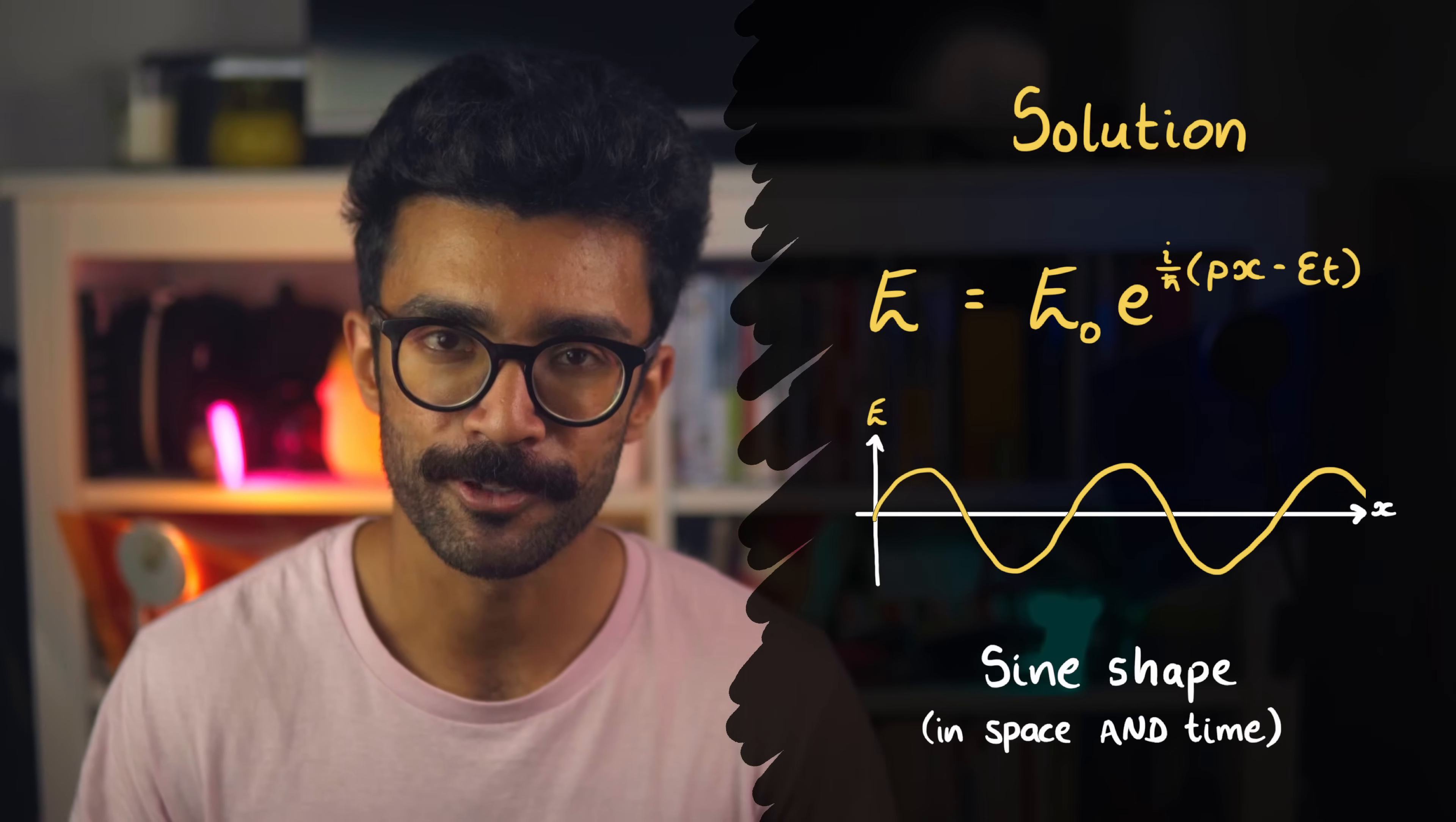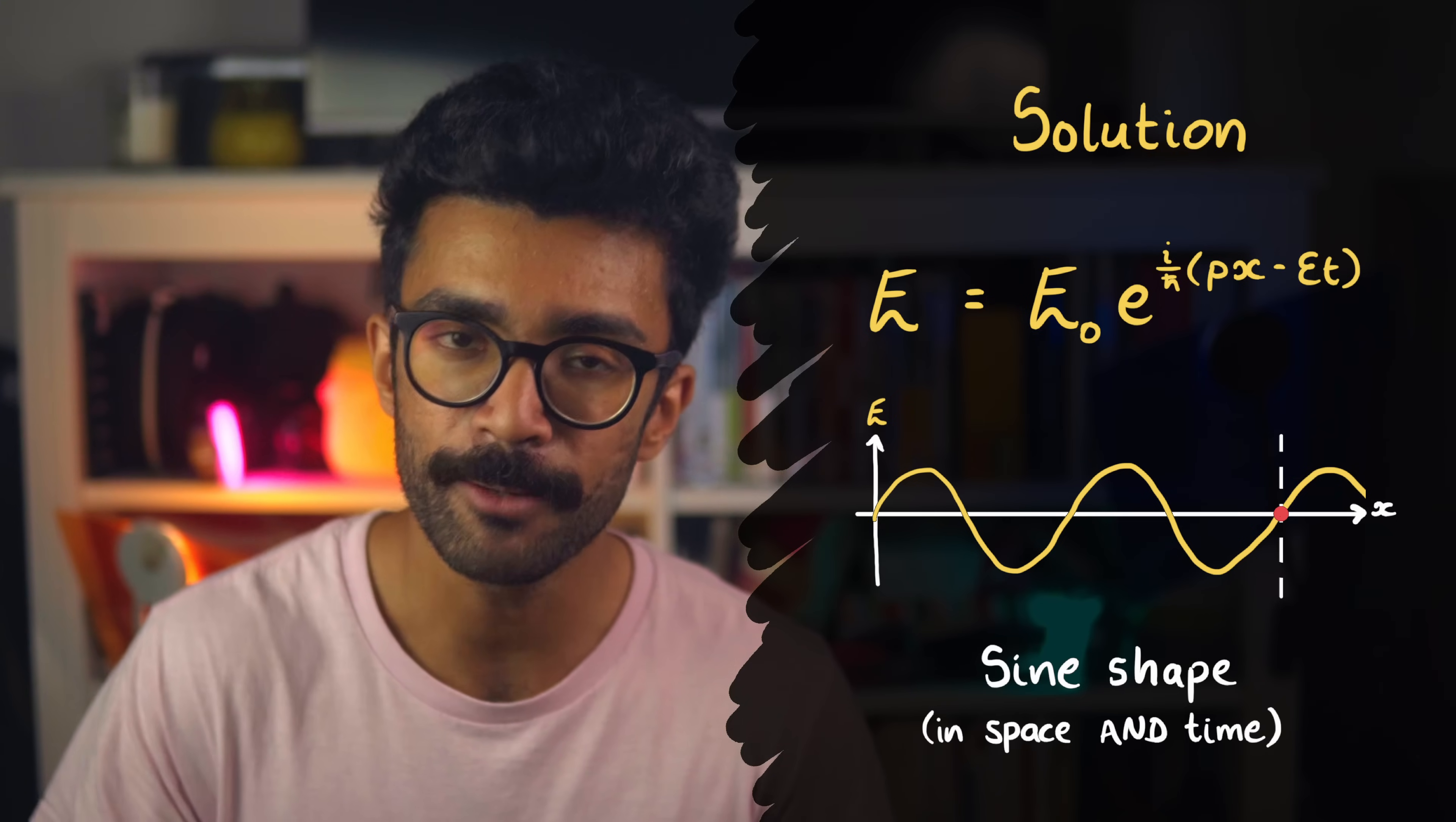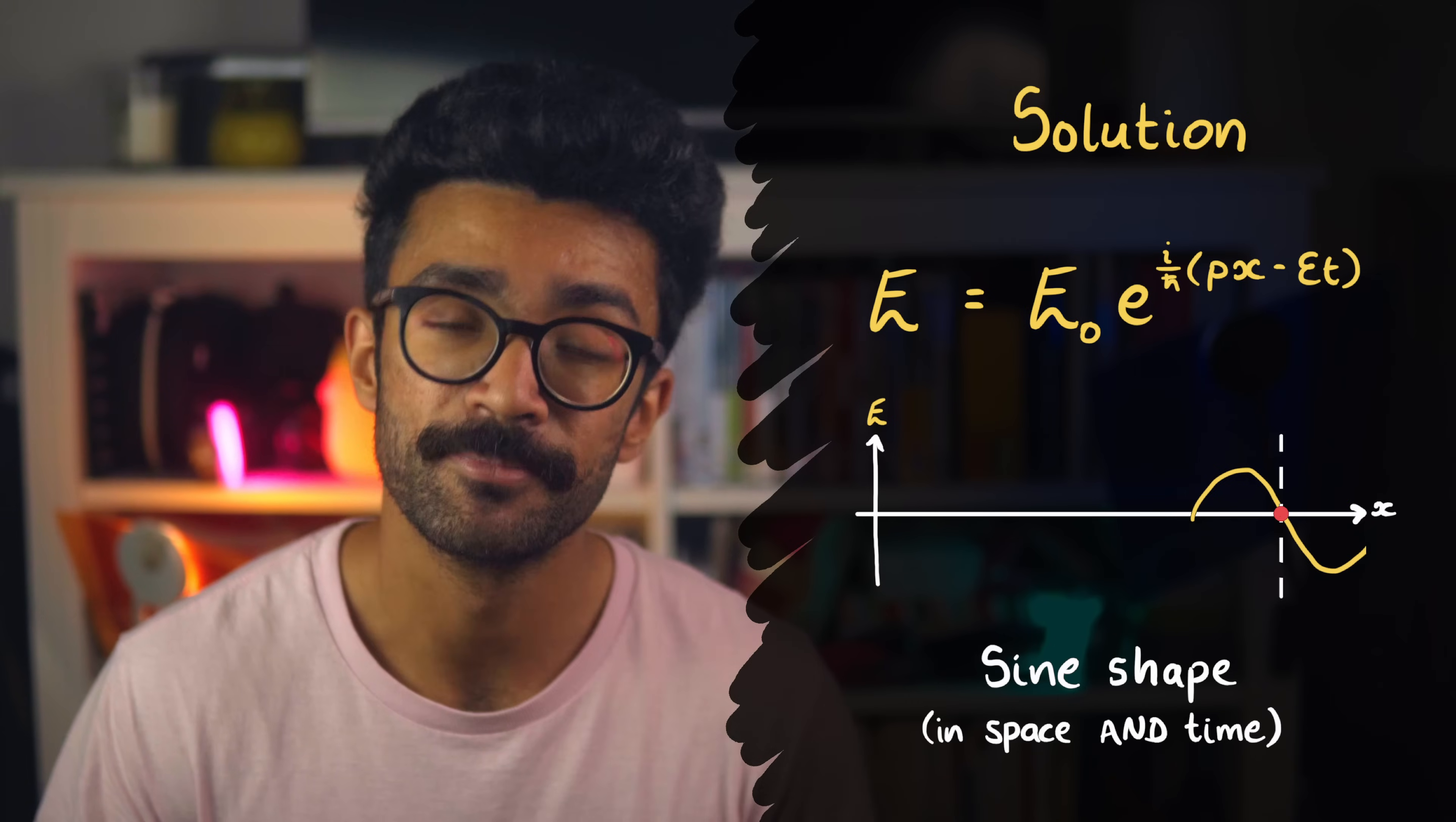Now the wave also travels through space as time passes, which means that if we instead focus on one point in space and look at how its e-field value changes over time, which is the reverse of what we were doing earlier, then we also see that the value of the electric field goes from e₀ to 0, to negative e₀ to 0 again, and so on.